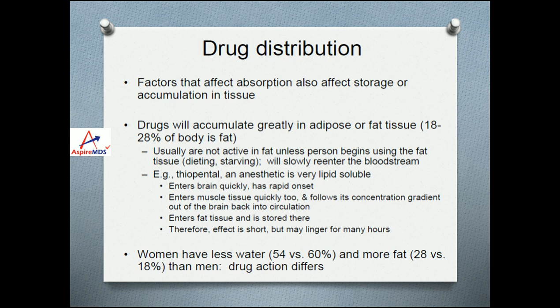The concept of redistribution is well explained by thiopental. Thiopental is an anesthetic and a very lipid-soluble drug. It enters the brain as soon as it is injected, then follows the concentration gradient back out of the brain into the circulation, gets redistributed to fat tissue and stored there. Therefore the effect is short, because once in the brain it starts redistributing. However, because it slowly comes out of the brain, the effect may linger for many hours. Drug distribution also differs between males and females because women have less water and more fat, so drug action can differ between them.